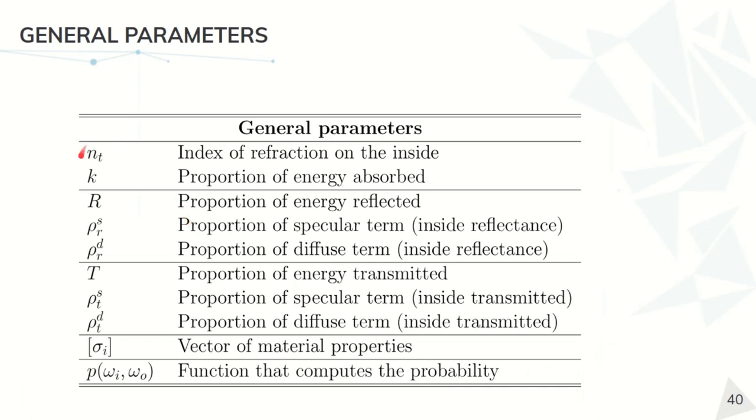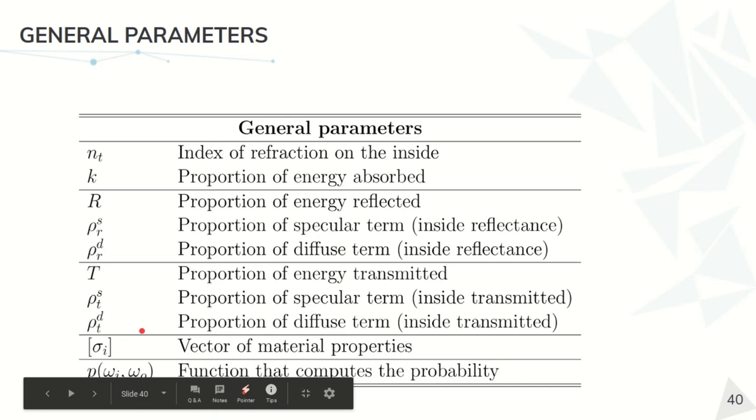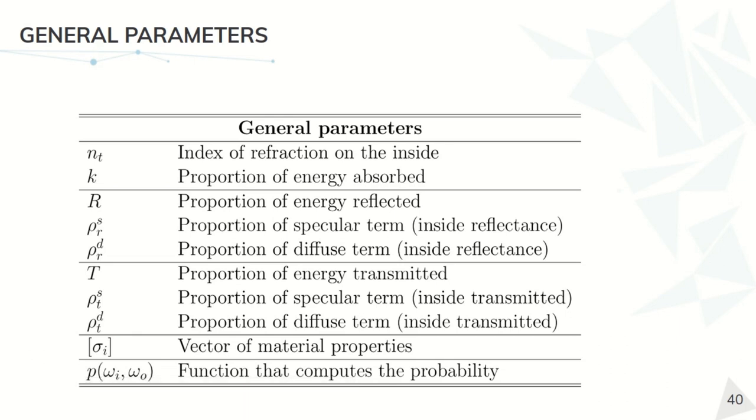In this sense, in a general model, we are going to have this kind of parameters. We are going to have two physical ones, the index of refraction and the absorption coefficient, and then we have all the energy proportion both for the reflected and transmitted terms, a vector of general properties, a vector of material properties, and also the function that computes all the previous probabilities. Of course, this is a very general model that the user can tune as they like, but we want to be a bit more specific.